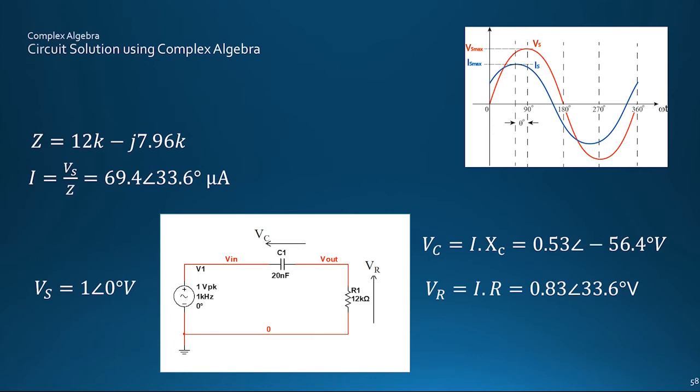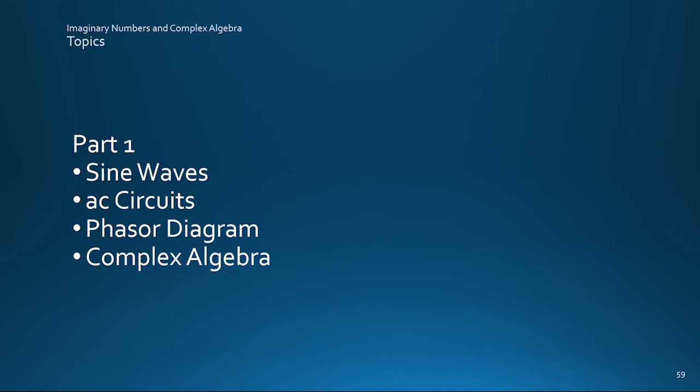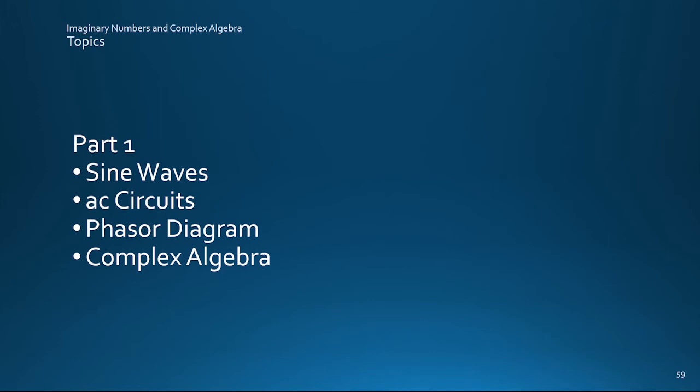And that just about wraps up this part. Although not perhaps a major worry for solving circuits, some aspects of complex algebra are still a bit of a puzzle though, in both the magic Euler equation, and in what imaginary numbers are anyway. Part 2 looks at those issues in a bit more detail.